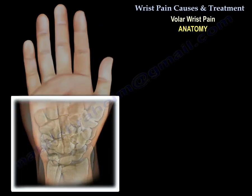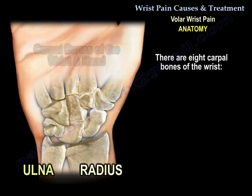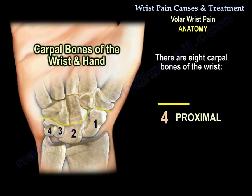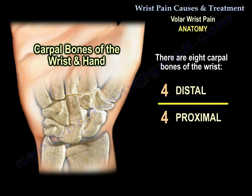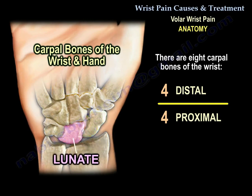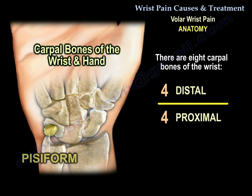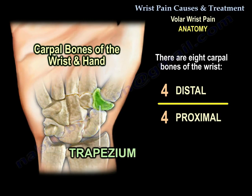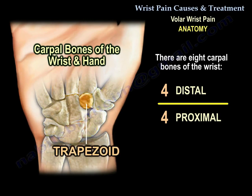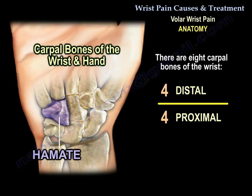There are eight carpal bones — four proximal and four distal. The carpal bones are the scaphoid, the lunate, the triquetrum, the pisiform, the trapezium, trapezoid, capitate, and hamate. You can see here the hook of the hamate.